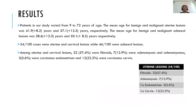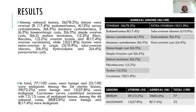Patients in our study ranged from 9 to 72 years of age. The mean age for benign and malignant uterine lesions was 41.9 years and 57.1 years respectively. The mean age for benign and malignant adnexal lesions was 38.6 years and 50.1 years respectively. 54 out of 100 cases were uterine and cervical lesions, while 46 out of 100 were adnexal lesions. Among the uterine and cervical lesions, 32 (57.4%) were fibroids, 7 (12.9%) adenomyosis, 3 (5.6%) carcinoma endometrium, and 12 (22.2%) carcinoma cervix.